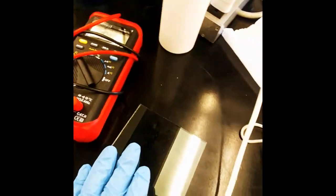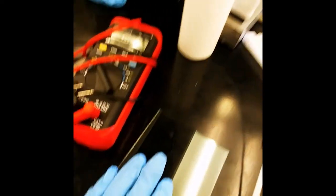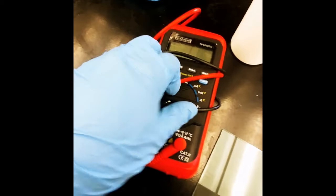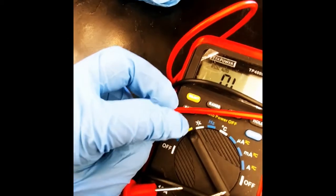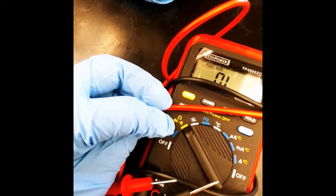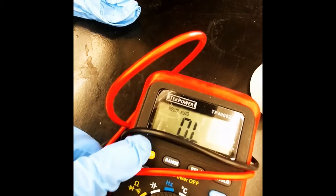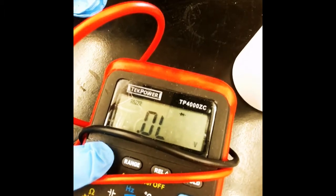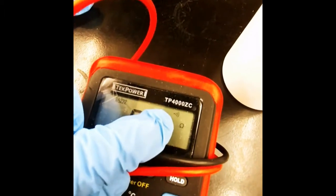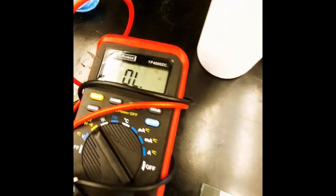So, in order to test the conductivity of this, we use a conductivity probe. If we go to this setting, which is resistance, and then we hit the select button until we see that sound sign, that's what we're going to use to test the conductivity of this.